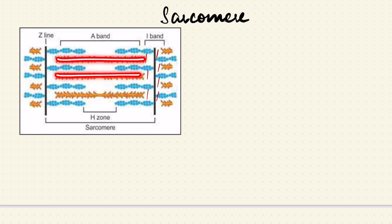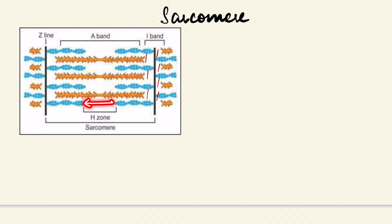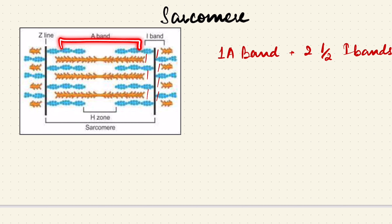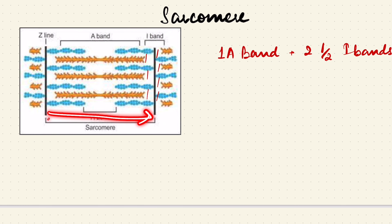The space in the center of the A band where only myosin is present and no actin is called the H zone. A sarcomere extends from one Z line to the next Z line. It contains one full A band and two halves of I bands — not full I bands, but half of an I band on each side. The length of a sarcomere is 2.5 microns — this is important to memorize.